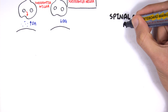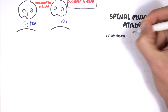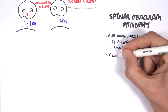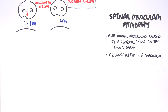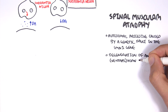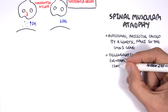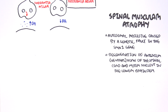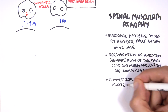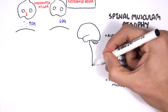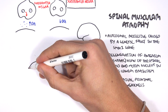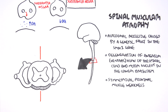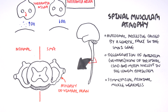The next condition is spinal muscular atrophy, which is somewhat similar to motor neuron disease. It is an autosomal recessive disease caused by a genetic fault in the SMN1 gene. In spinal muscular atrophy, we have degeneration of the ventral horn of the spinal cord as well as the motor nucleus in the lower brainstem, resulting in symmetrical proximal muscle weakness. On a cross-section, we see atrophy of the ventral horn and the lower brainstem.